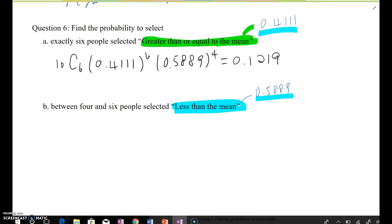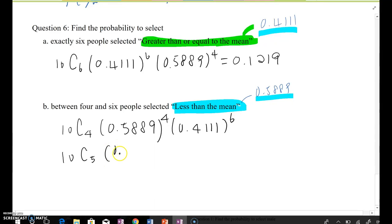So that should be, now you have to do 10 C4 and 0.5889 to the fourth power, 0.4111 to the sixth power. And 10 C5, 0.5889 to the fifth power, 0.4111 to the fifth power.